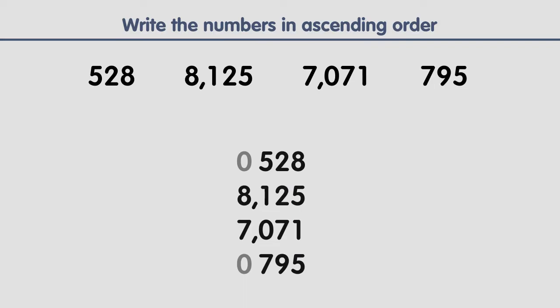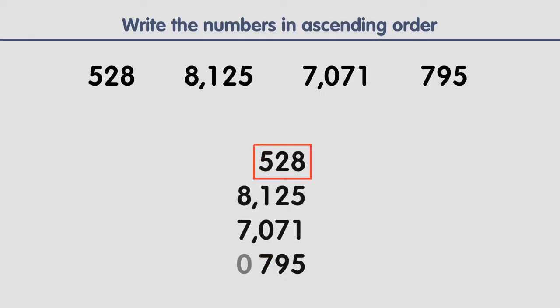The third step is to find the smallest number. The smallest number is the number with the smallest digit in the first column. In the first column we have zero, eight, seven, and zero. The smallest digit is zero, but it repeats, so we look at the smallest digit in the second column. We have five and seven — five is smaller than seven, so we choose this number as the smallest number.